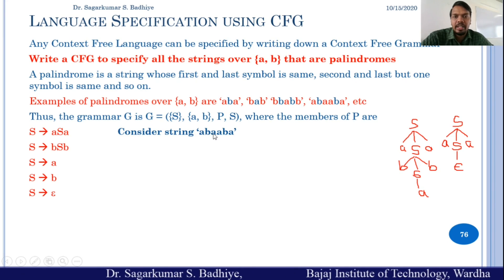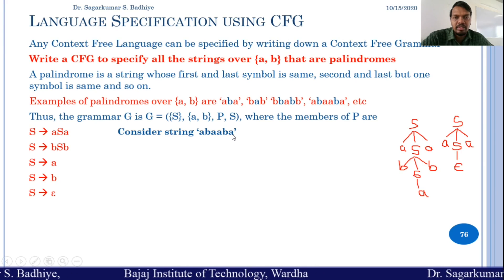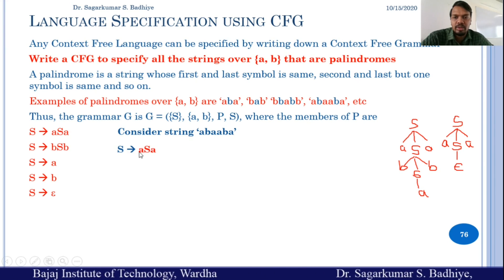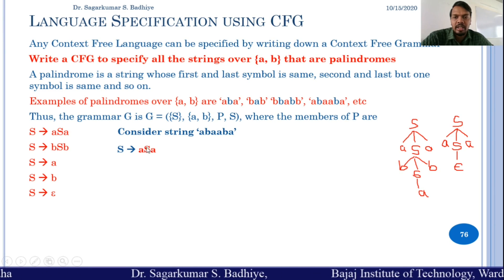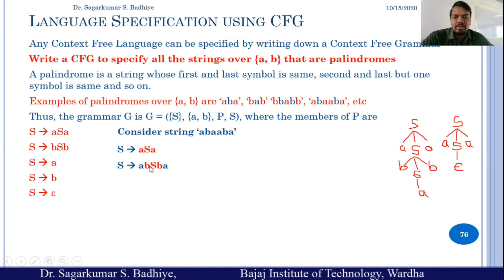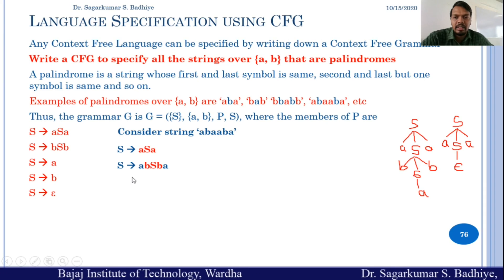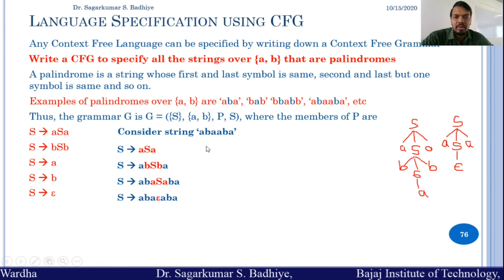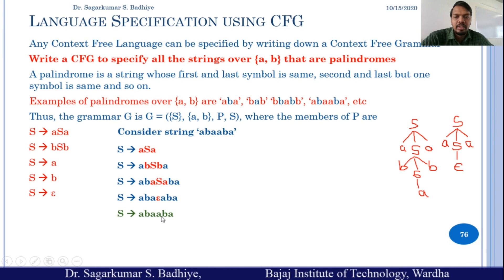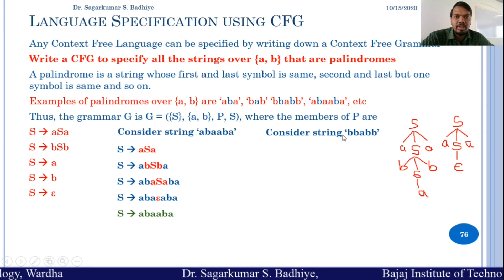Consider the string A B A A B A. This can be generated using the above production rules. Since the string starts with A and ends with A, we use S → A S A. The next symbol is B, so we replace the central S by B S B, giving A B S B A. Then we replace S by A S A, and finally replace S with epsilon. The result is A B A A B A, which reads the same from front and back.